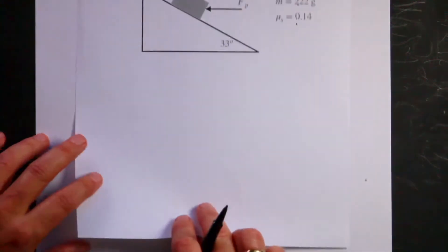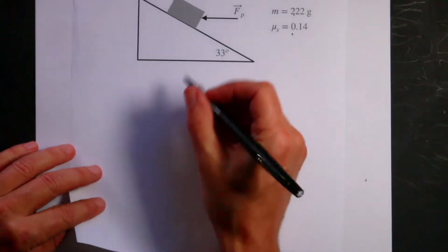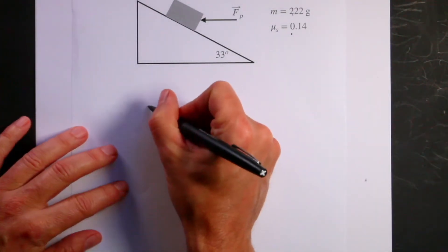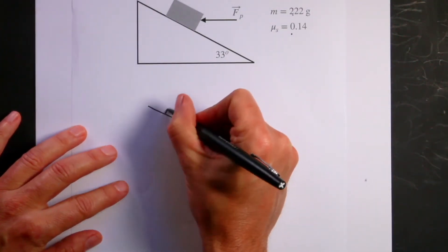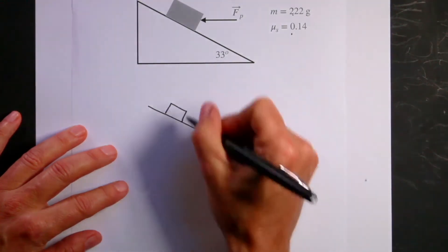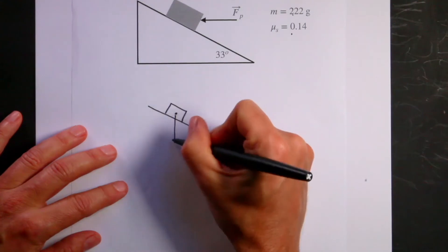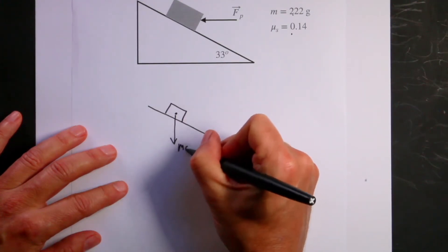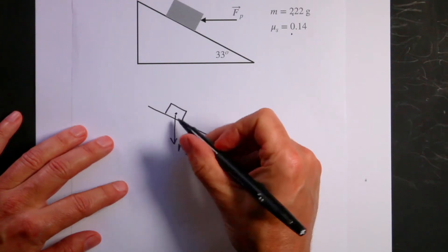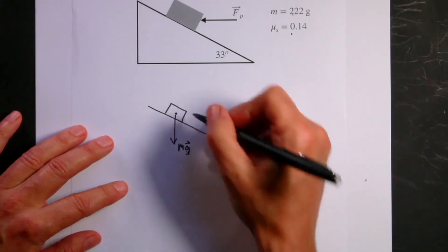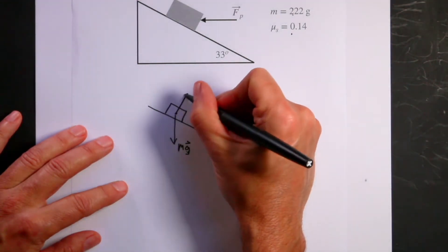Let's start with how much do I have to push horizontally to prevent this from sliding down. I want to redraw the picture. Here's my block. What forces are acting on the block? I have the downward gravitational force, mg, and then I have the force from the surface pushing up, the normal force, and that's this way, N.